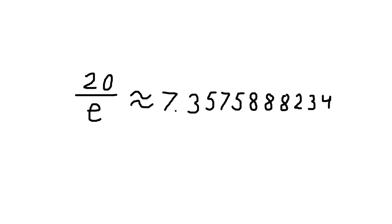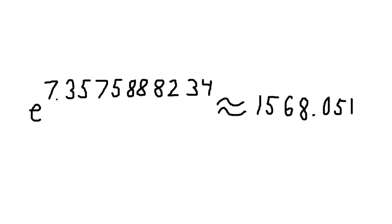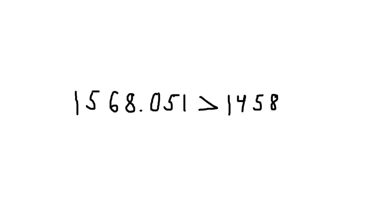That's right! If we take 20 divided by e, we get approximately 7.3575888234. And sure enough, e to the power of 7.3575888234 is roughly equal to 1,568.051, which is much larger than 1,458. E is the optimization number.